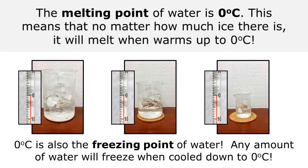The melting point of water is zero degrees Celsius. This means that no matter how much ice there is, it will melt when it warms up to zero degrees Celsius. This is not about how much time it takes for the ice to melt — it may take more time for ice in a large beaker than in a small beaker. But as all the ice melts in all three beakers, they will all be melting at the same temperature of zero degrees Celsius.